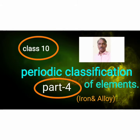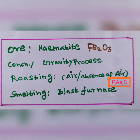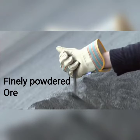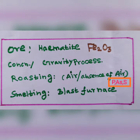The ore of iron is hematite Fe2O3. First, it is finely powdered, then first step concentration, gravity process.